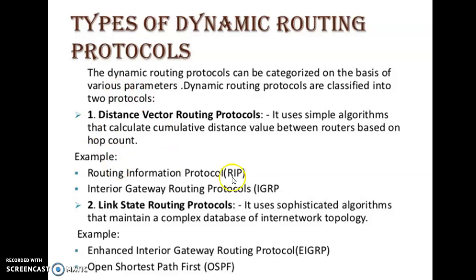Before proceeding towards Routing Information Protocol, we will first understand the different types of Dynamic Routing Protocol. Dynamic Routing Protocols can be categorized on the basis of various parameters and are classified into two protocols: first, Distance Vector Routing Protocol, and second, Link State Routing Protocol. In case of Distance Vector Routing Protocol, the path taken by the data depends totally on the distance. If there are two paths, the one with the smallest distance would be considered for transmitting the data.